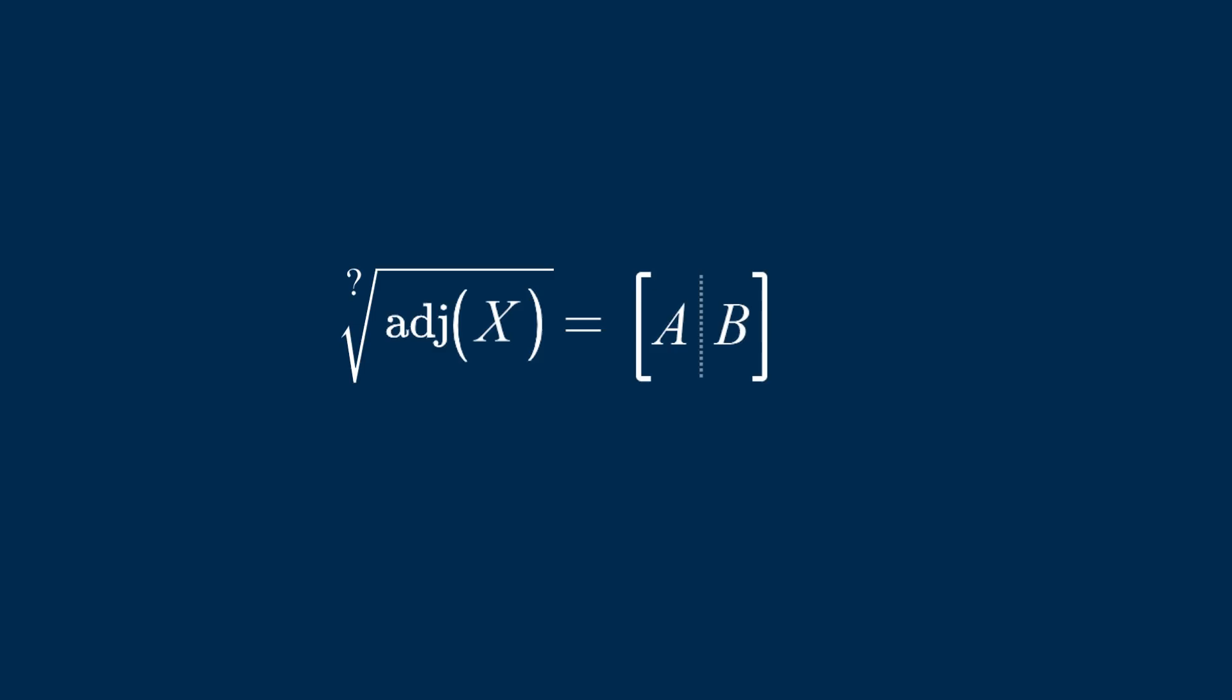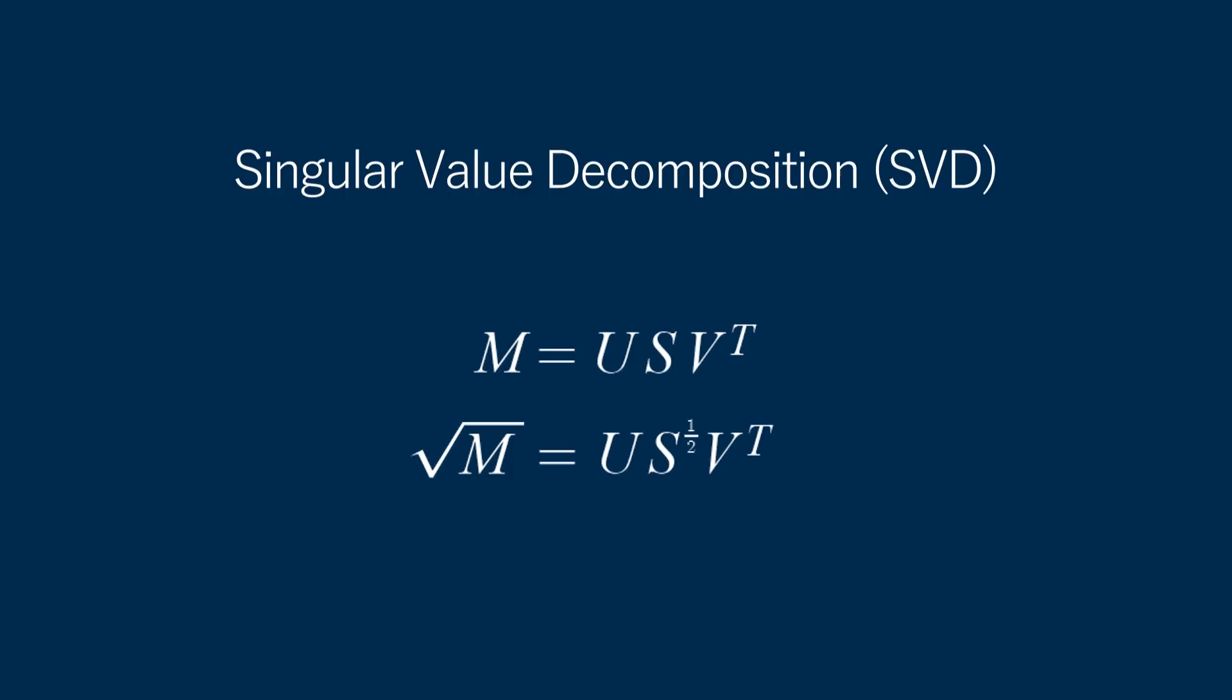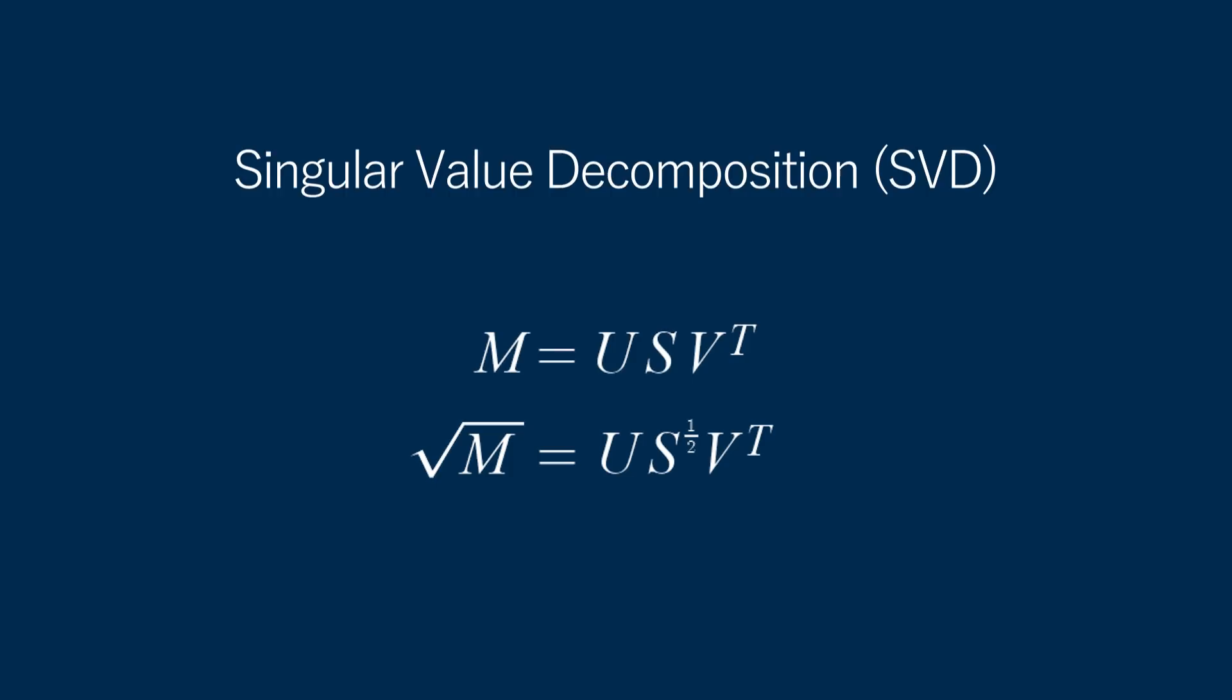And of course, there is actually a way to square root a matrix, using my favorite technique, singular value decomposition. In SVD form, square rooting a matrix is really easy. Just square root the numbers on the diagonal. So finally, that gives us an A and B axis for the ellipse.